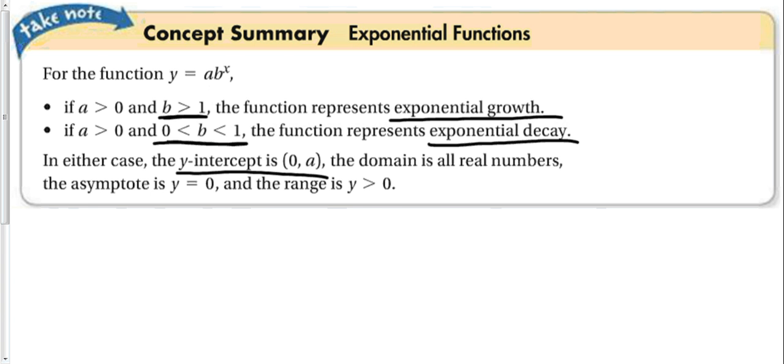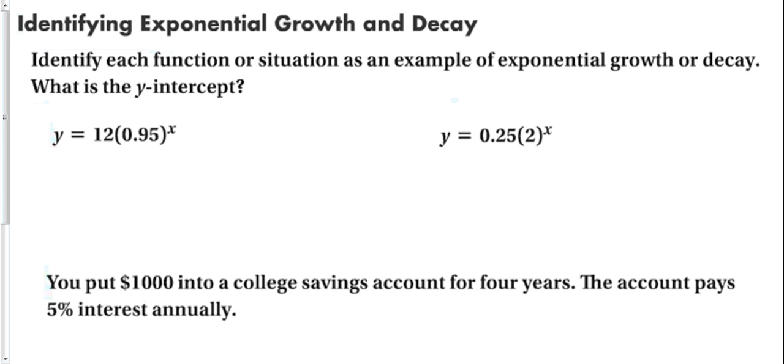So whatever number there is there is going to be the y intercept. Whatever number is right here is going to represent growth or decay. So let's look at a problem and see how it works. In this case, our A would be here. Our B would be here. B is always the number that is raised to the exponent, to the variable. So in this case, this would represent decay because B is less than one, in between one and zero. And our y intercept would be zero comma A, which is 12. On this one over here, this would represent growth. And my intercept would be zero comma A, which is 0.25.